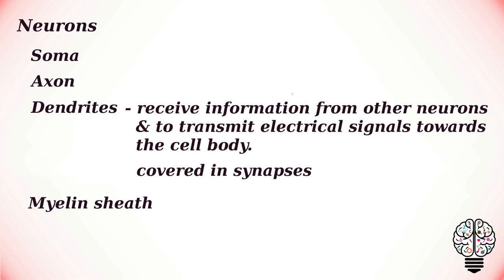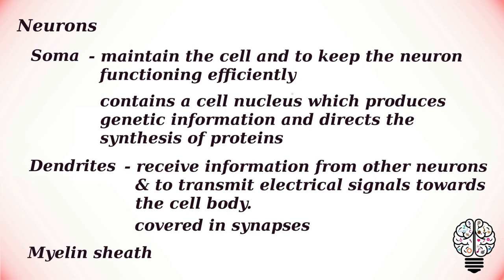In the central nervous system, neurons are long and have complex branches that can allow them to receive signals from many other neurons. The soma, or cell body, is essentially the core of the neuron. Its function is to maintain the cell and keep the neuron functioning efficiently. The soma is enclosed by a membrane which protects it but also allows it to interact with its immediate surroundings. The soma contains a cell nucleus which produces genetic information and directs the synthesis of proteins.